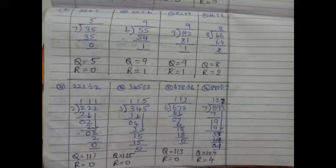One more sum: 55 divided by 6. Say the 6 times table up to 55. 9 sixes are 54, remaining 1. So the quotient is 9 and the remainder is 1. Next sum: 82 divided by 9. 9 nines are 81; 82 minus 81 is 1. So the quotient is 9 and the remainder is 1. Similarly, we can do the remaining sums.